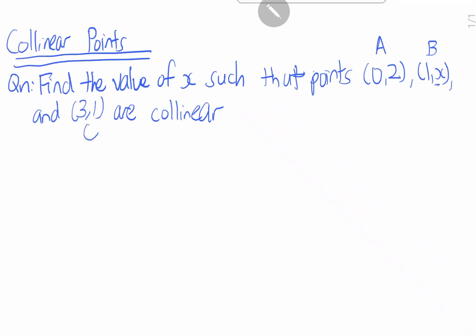So what does this mean? If they are collinear, it means that they lie on the same line and they have the same direction vector. This means that AB, the direction vector of AB, equals the direction vector of BC, and this means that B is a common point.